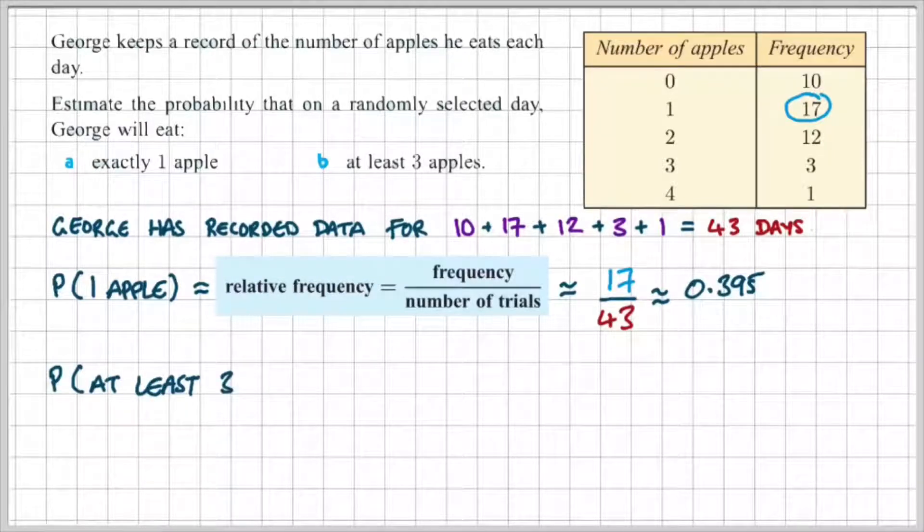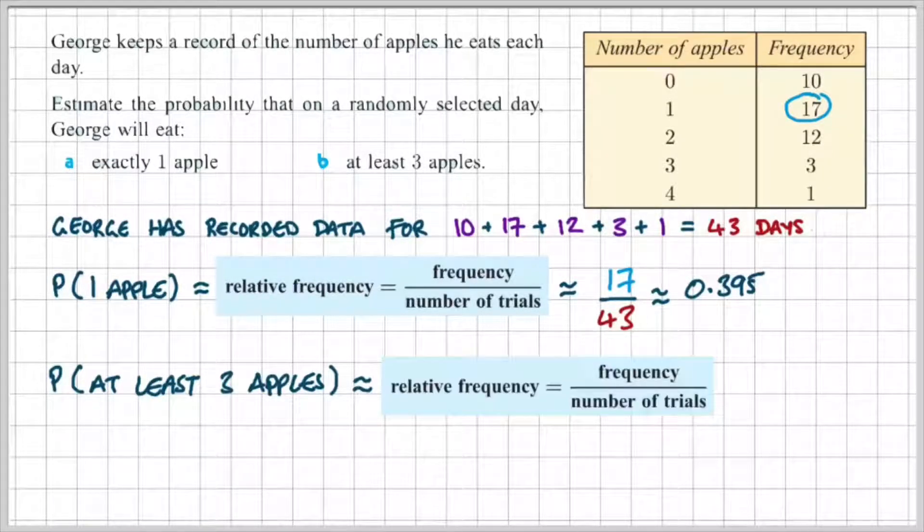Okay, part B. So, the probability that George eats at least three apples. So, the word at least here can refer to the fact that George could eat three or more apples. So, in this case, he can eat three or four apples because that's the data that we have in the table.